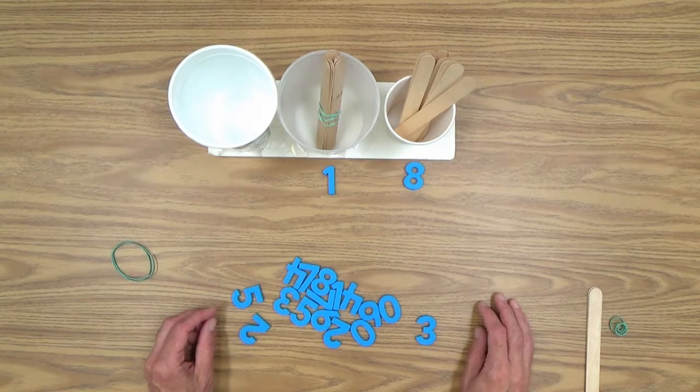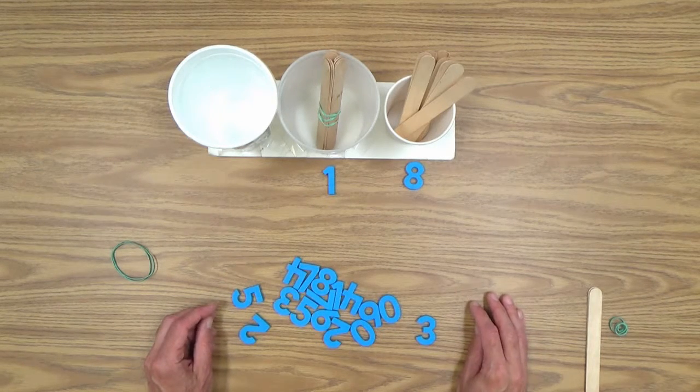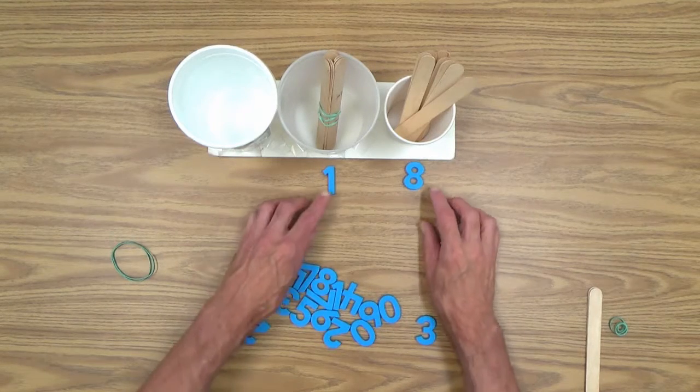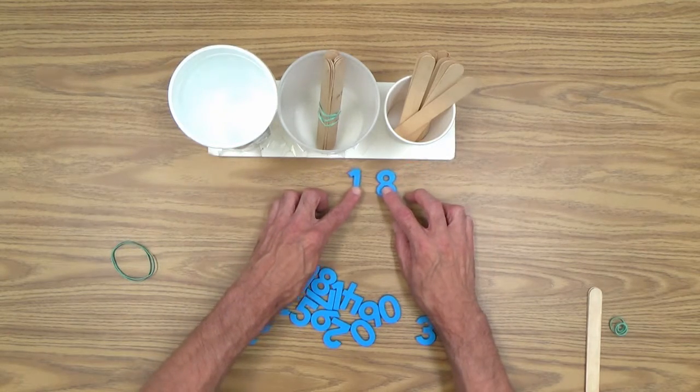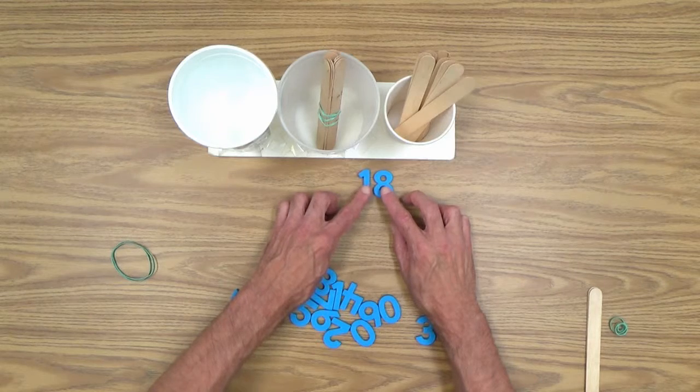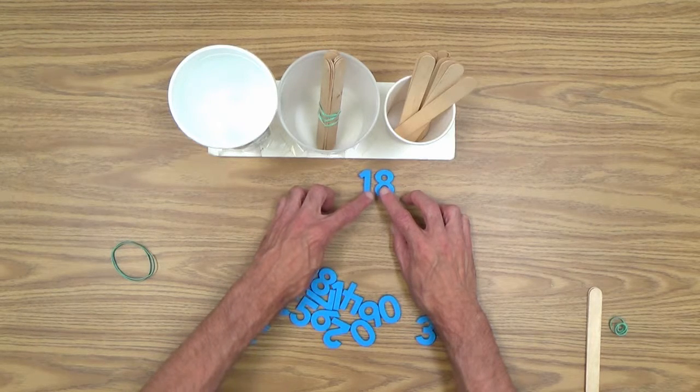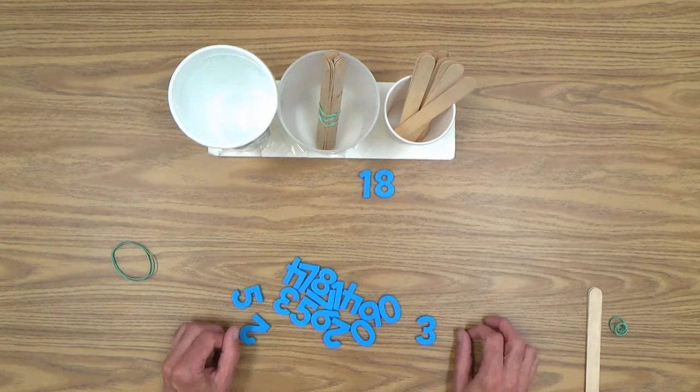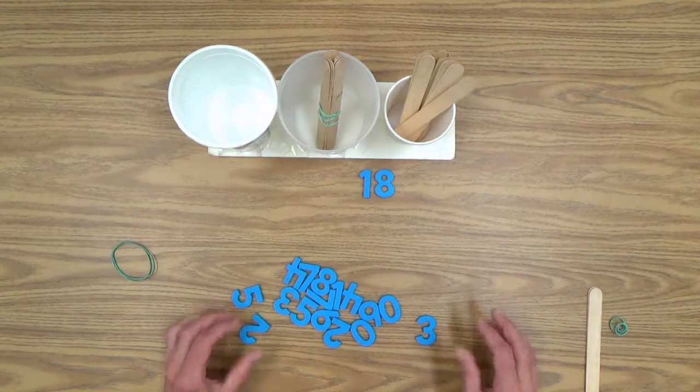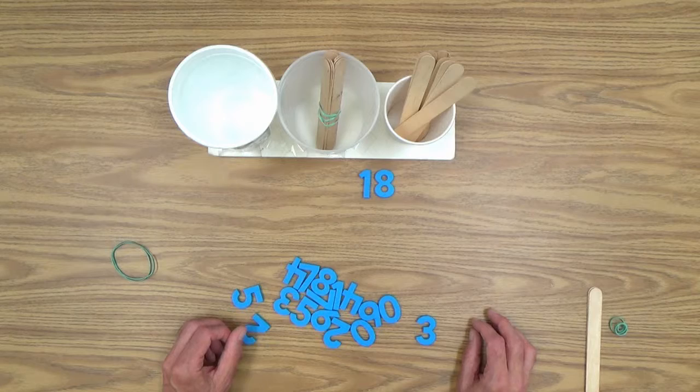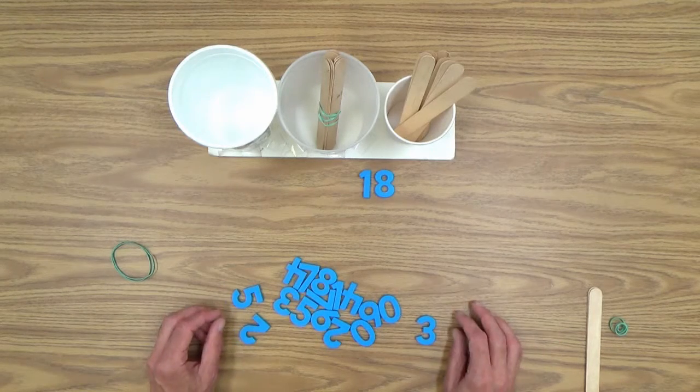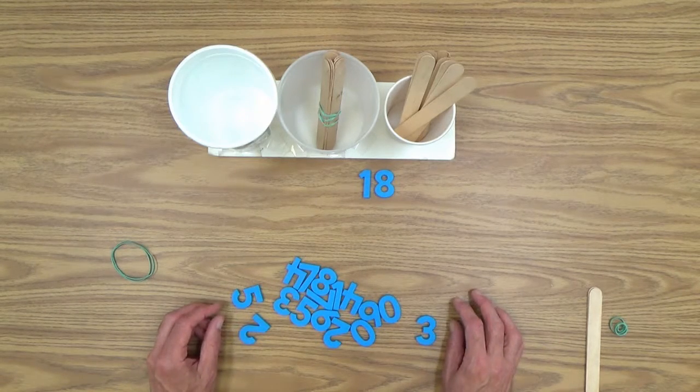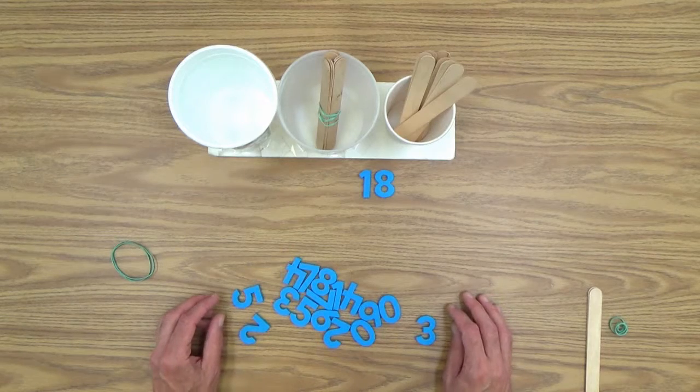And then you can ask your child, well, how many craft sticks are in there all together? And if he doesn't do it, hopefully he will, he'll push these numbers together or you'll have to help him. And he will say, I know how many are in there. There's 18. So you can do the activity both ways and practice this a lot until your child can really do it quite easily.